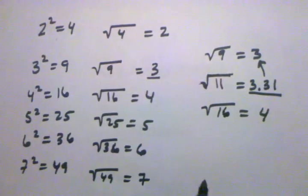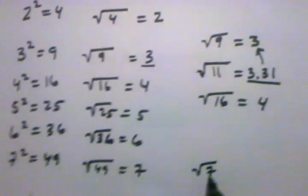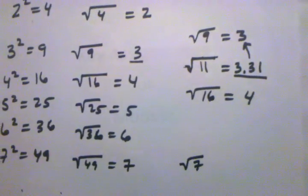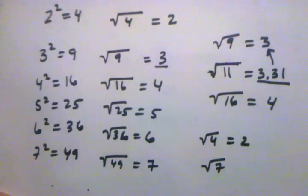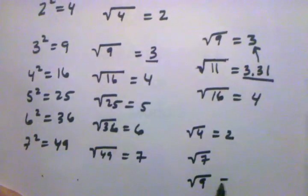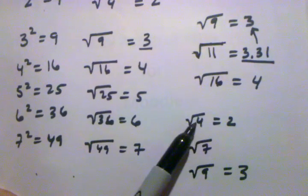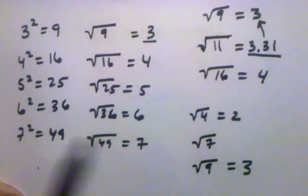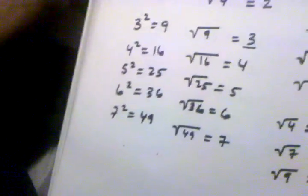Let's try another example: the square root of seven. There are no two whole numbers you can multiply together to get seven, so the square root of seven will fall between some whole numbers. The perfect square before seven is four, so the square root of four equals two. The perfect square after seven is nine, so the square root of nine equals three. Seven is almost in the middle between four and nine, so I'd guess the square root of seven is something like two point six.